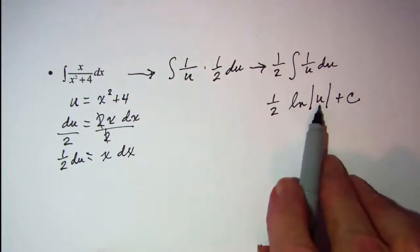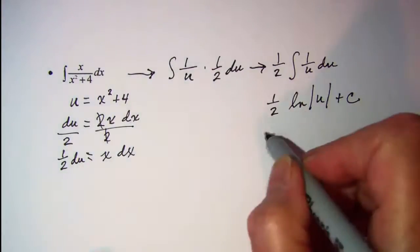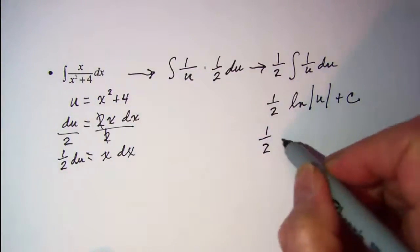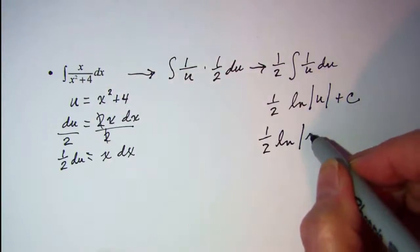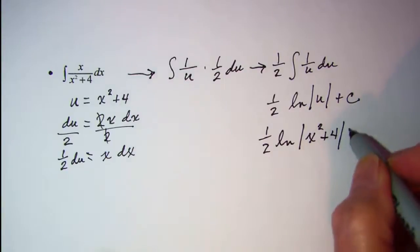Now we'll substitute back in. In place of u, we need to put x squared plus 4. So we have 1 half ln absolute value of x squared plus 4 plus a constant.